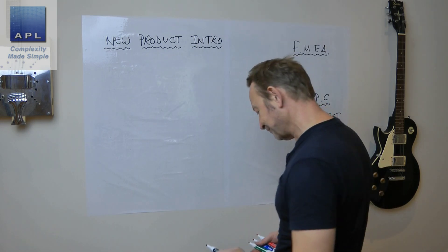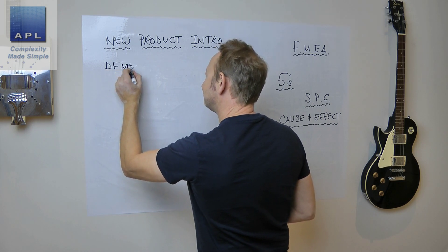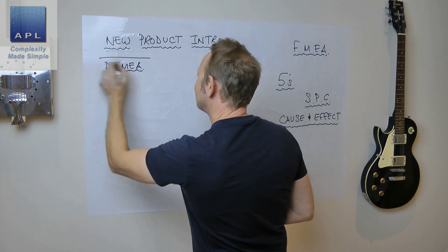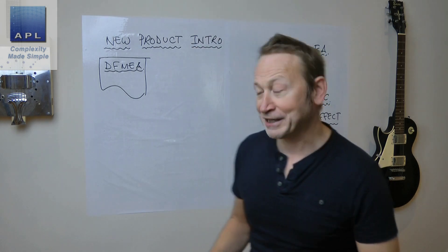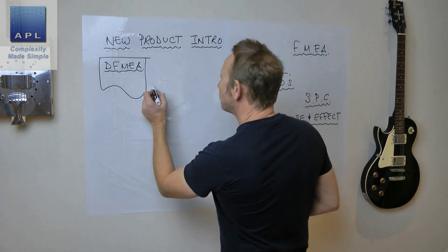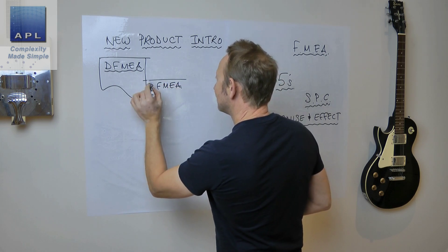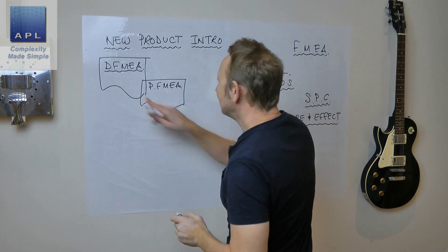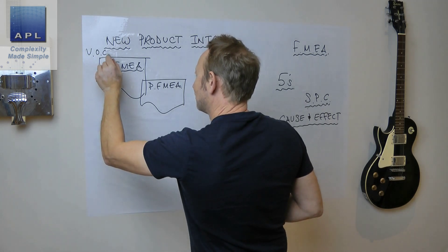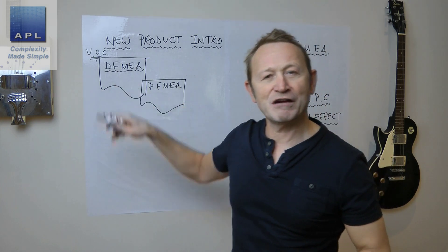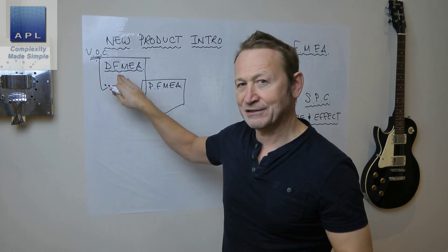Let's go through the set of steps. The first one is the design FMEA. The design FMEA is turning the voice of the customer. Up here we've got the voice of the customer, which goes into the design FMEA.